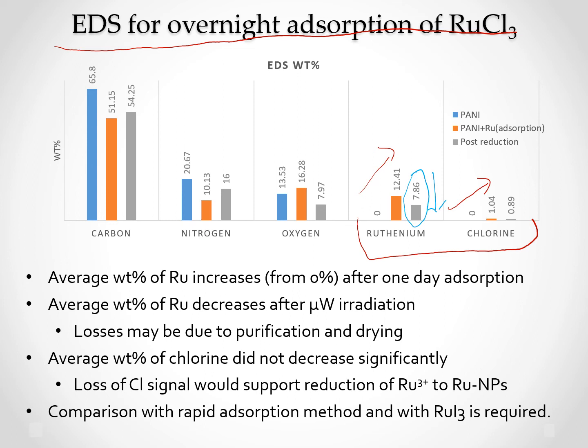For chlorine, we expect it to go to zero after reduction, but it does not, which indicates that the ruthenium has not been fully reduced. More study is needed for rapid adsorption methods and for ruthenium iodide.